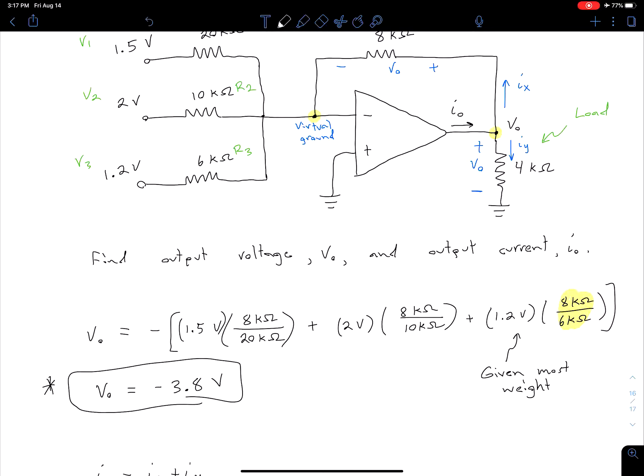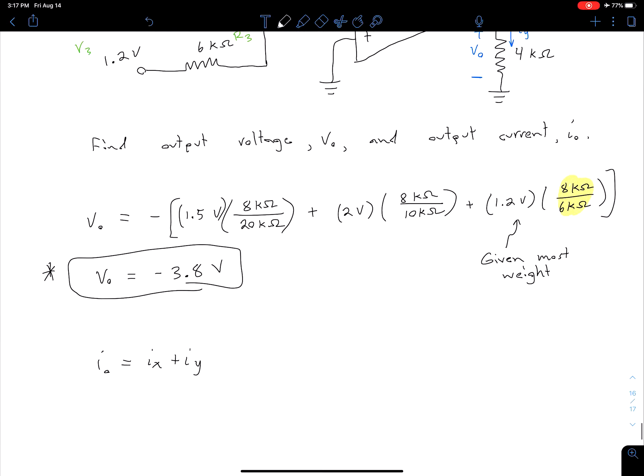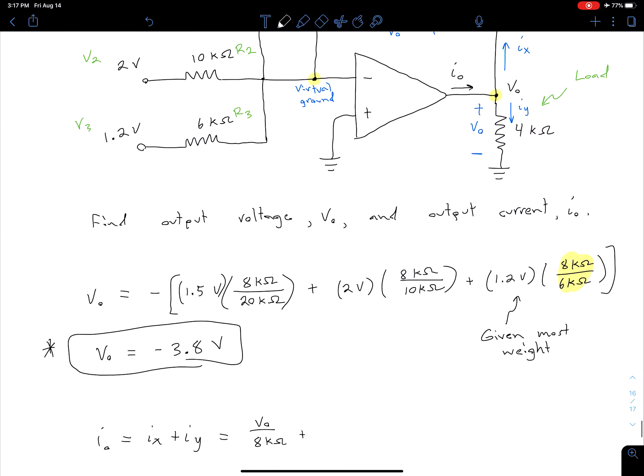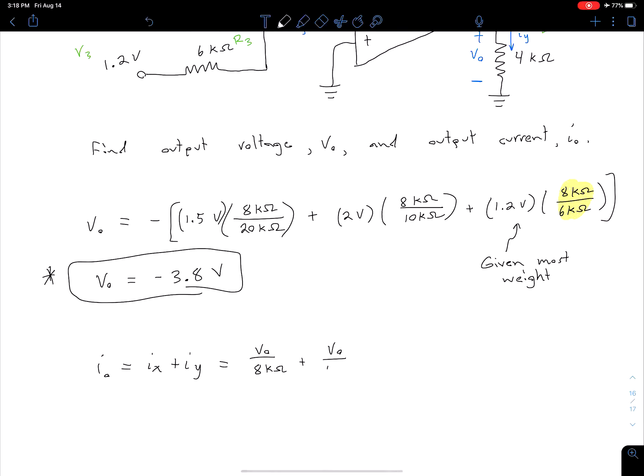We can see from looking at the top, our I_X in terms of V_out is just going to be V_out over 8 kΩ, so I_X is V_out over 8 kΩ, and then plus I_Y we can see from Ohm's law is just going to be V_out divided by 4 kΩ. Then we just plug in our -3.8, so we have -3.8 divided by 8 kΩ, and then plus -3.8 divided by 4 kΩ.